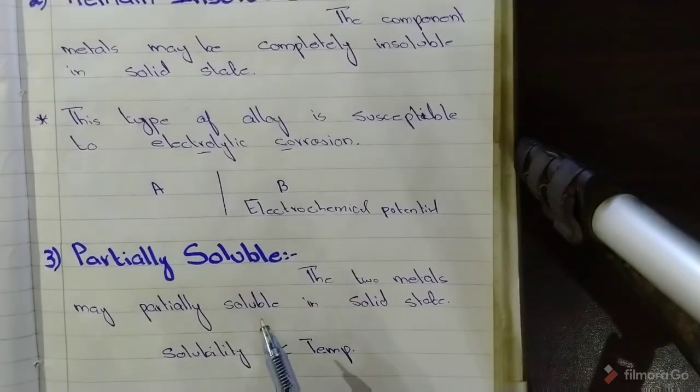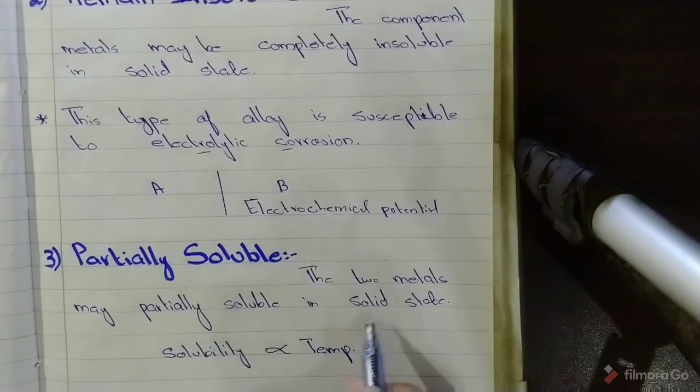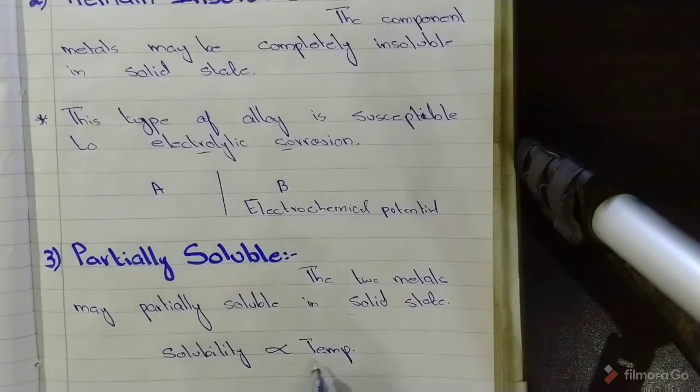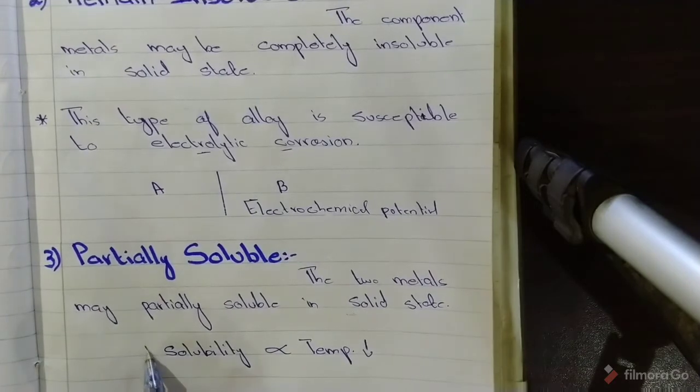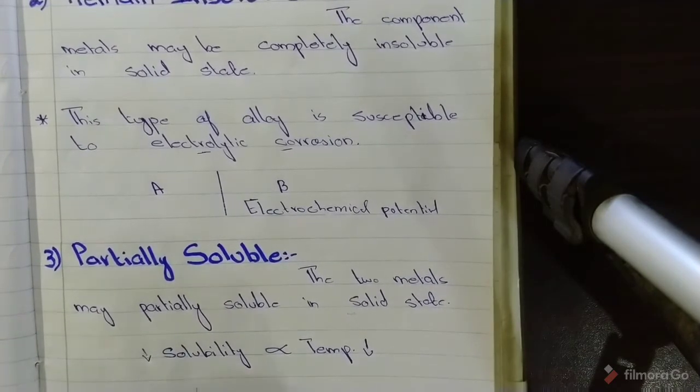Now thirdly, what happens is that these two metals may remain partially soluble in the solid state. Solubility of metals is directly proportional to temperature. As temperature drops, the ability of solubility drops too. And these partially soluble alloys occur more frequently than the previously mentioned insoluble alloys.